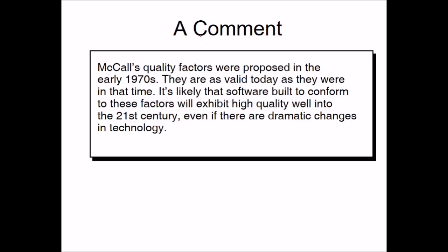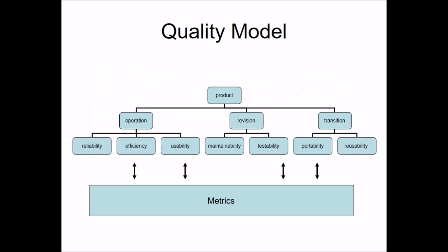McCall's quality factors were proposed in the 1970s and are valid today. Software built to conform to these factors will exhibit high quality well into the 21st century, even with dramatic technology changes. The McCall quality model has three dimensions: product operation (reliability, efficiency, usability), product revision (maintainability, testability), and product transition (portability, reusability). This shows how quality and metrics are closely related.